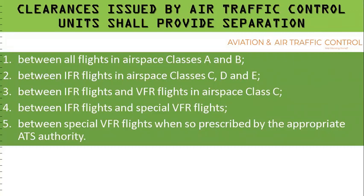Clearances issued by an ATC unit shall provide separation between all flights in airspace classes A and B; between IFR flights operating in classes C, D, and E; between IFR and VFR flights operating in class C airspace; between IFR flights and special VFR flights; and between special VFR flights themselves.